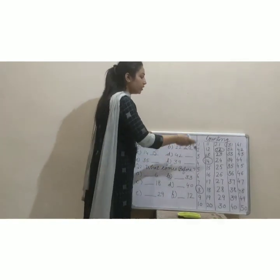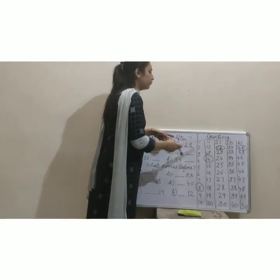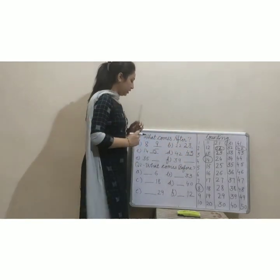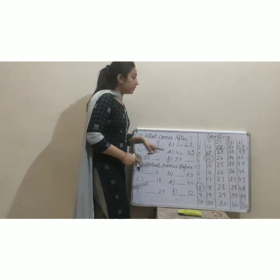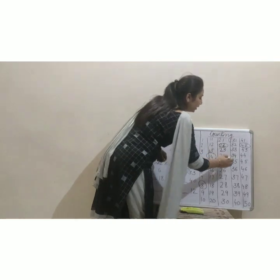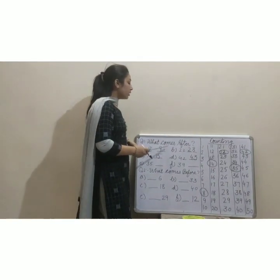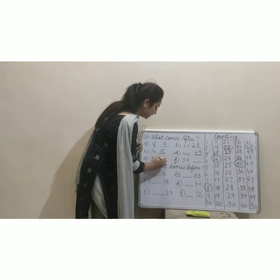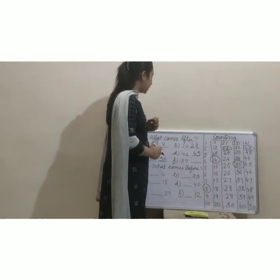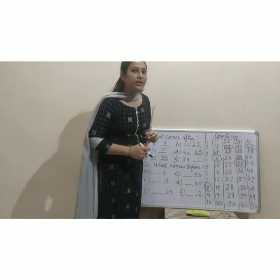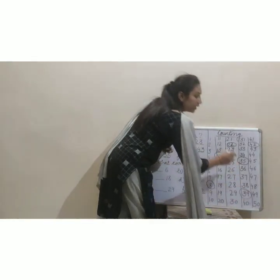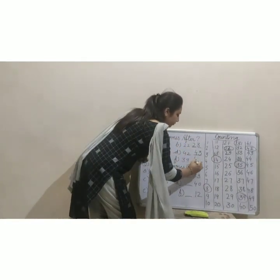Next is 42. Where is 42? This one is 42. What comes after 42? 43 — yes! Write here 43. Next is 35. This one is 35. What comes after 35? 36 — very good, write here 36. Next is 39. What comes after 39? 40 — yes! Your answer is 40, write here 40. Understood?